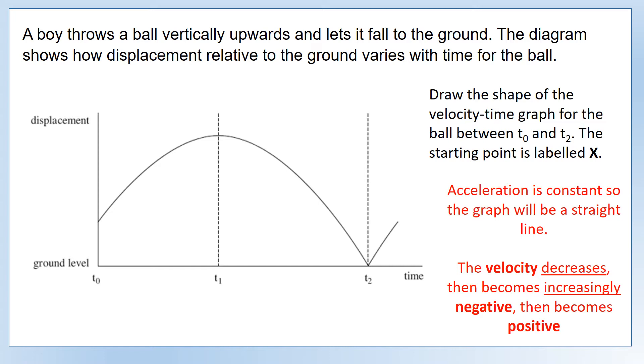The velocity as it moves upwards is going to decrease to zero, then it's going to turn around and come down and become increasingly negative. Then it's going to hit the ground and become positive again as it bounces back upwards. That's generally how we describe what's going to happen.